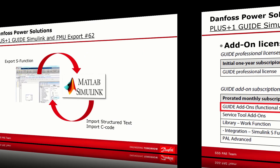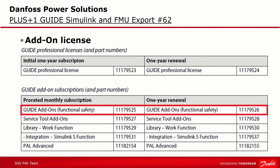Now we will take a look at the feature Generate Functional Mock-up Unit, called FMU. This function is available via the Guide add-on license called Guide Functional Safety or Guide add-on license Quality Assurance. Like any other add-on license, a Guide Professional parent license is needed. Besides this add-on license, no other package or license is needed to use Generate FMU in Guide.